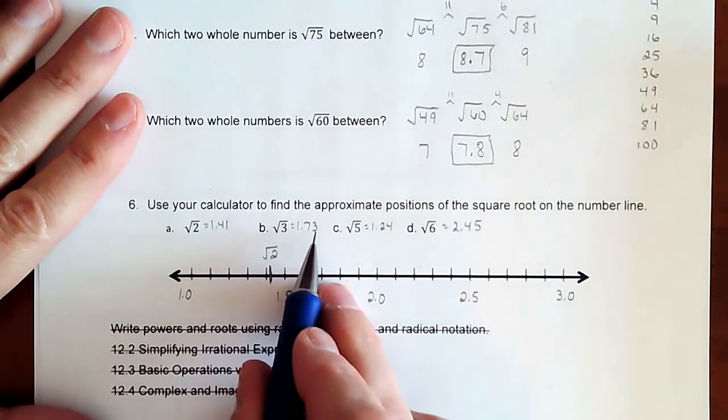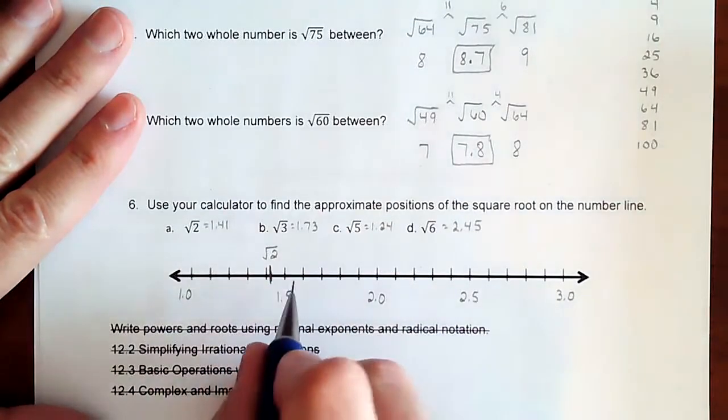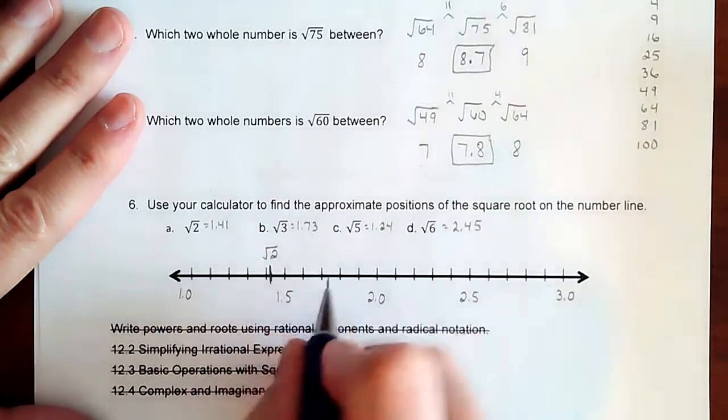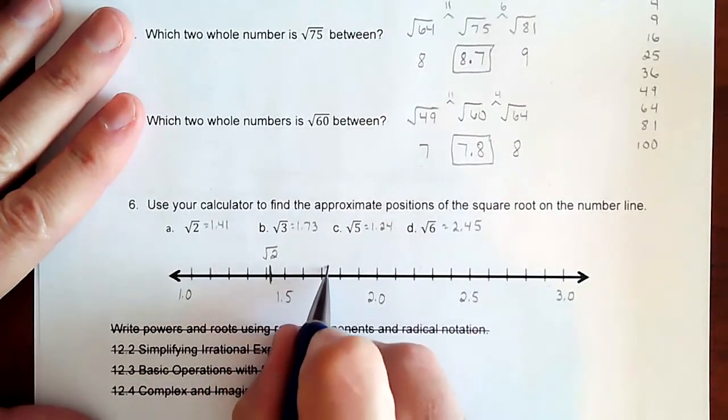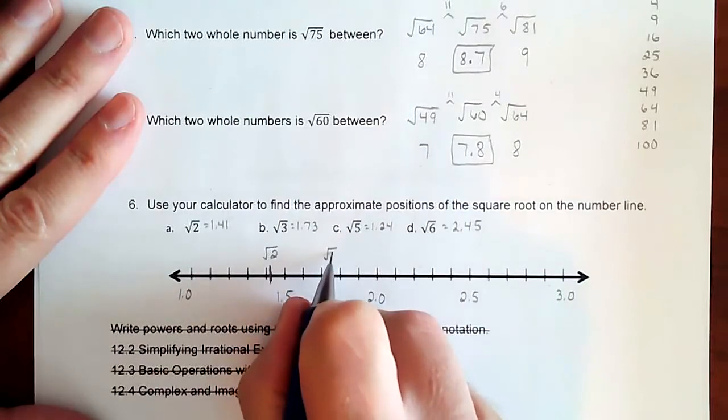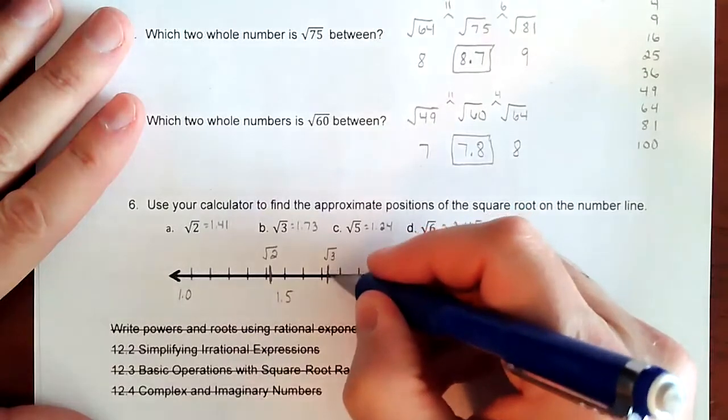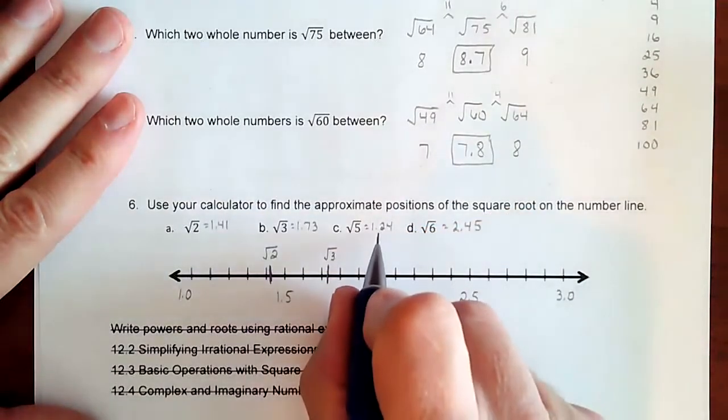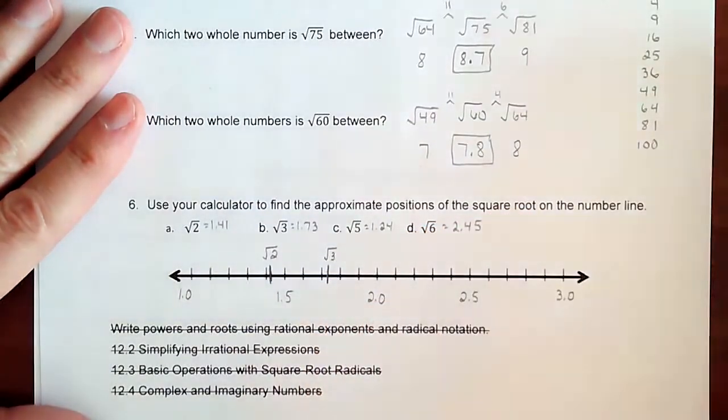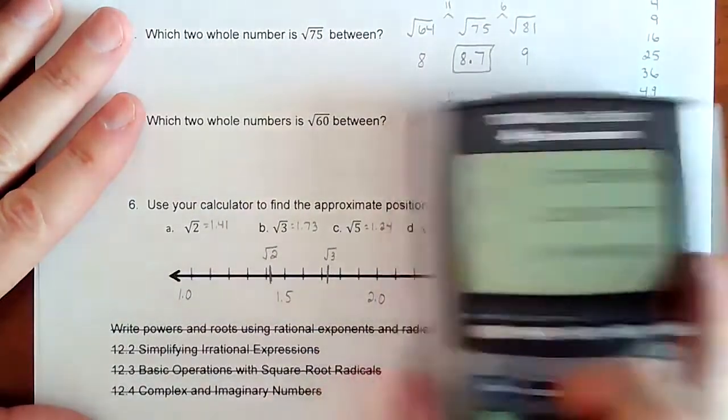And then here it's 1.7 and some change. So this is 5, 6, 7, and a little further out. So square root of 3.